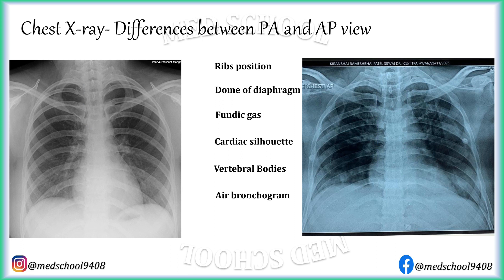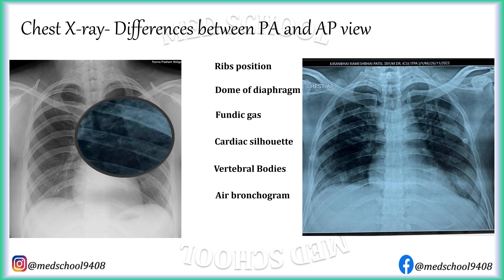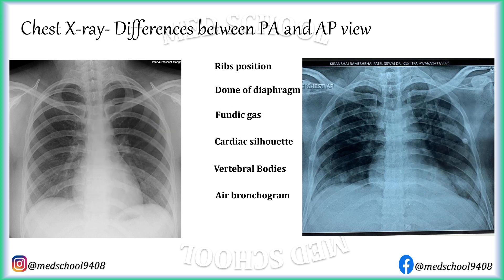In PA view, the lungs get larger space as the dome of the diaphragm is lower, so the air bronchogram is not dense. While in AP view, the lungs get lesser space and the bronchi are crowdly placed, making the air bronchogram dense. In PA view, the scapula lies along the lateral surface of the ribcage and does not encroach the lung fields, while in AP view the scapula lies along the posterior surface of the ribcage and encroaches the lung fields.